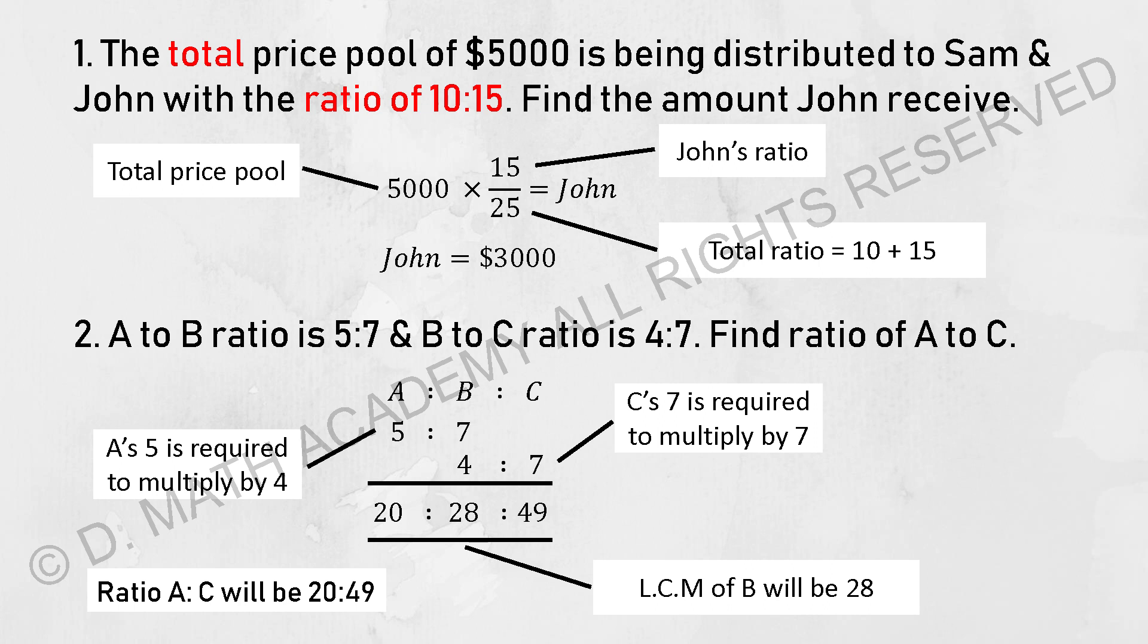The question goes: the total prize pool of $5000 is being distributed to Sam and John with the ratio of 10:15. Find the amount John received. I labeled there that the 5000 is the total prize pool multiplied by John's ratio, which is 15 at the top of the fraction. The bottom part, the denominator, is the total ratio of this group, which is 25 (10 plus 15). Then you run the calculation, and you should get John's final amount received as $3000.